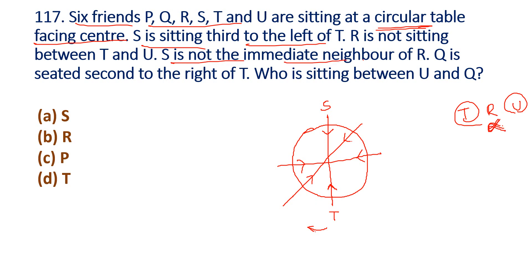Third clue: S is not the immediate neighbor of R — R is not next to S. Fourth clue: Q is seated second to the right of T — first right, then second right, so Q is placed there. Now the question is: who is sitting between U and Q?